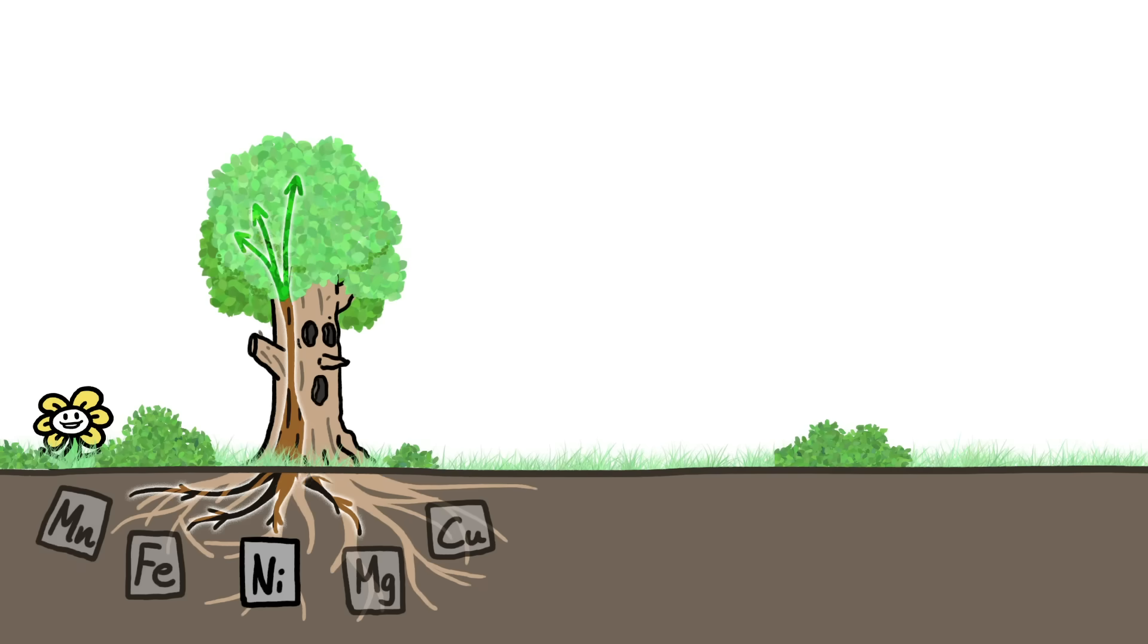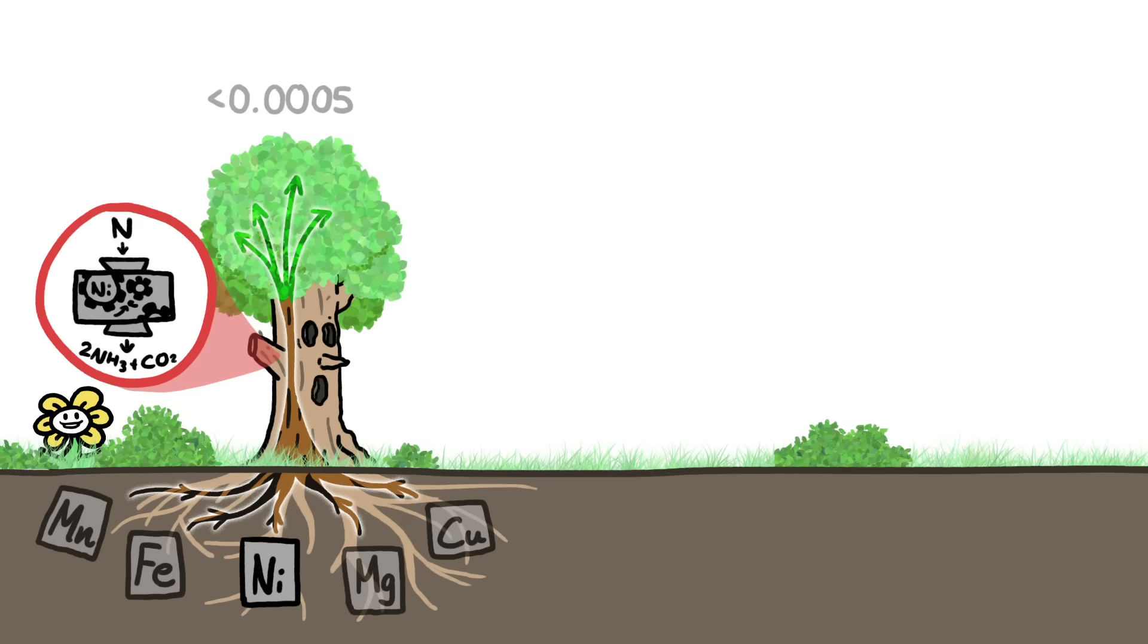All plants are able to take some metals up from the soil. After all, they're used in crucial tasks. Nickel, for instance, is a critical part of plants' nitrogen cycle. But most plants contain less than 0.0005% nickel and similar levels of other metals.